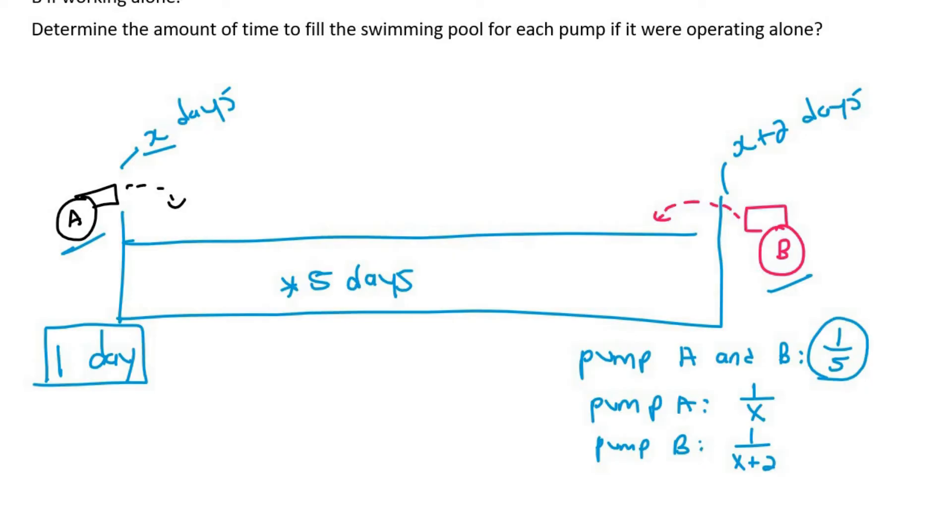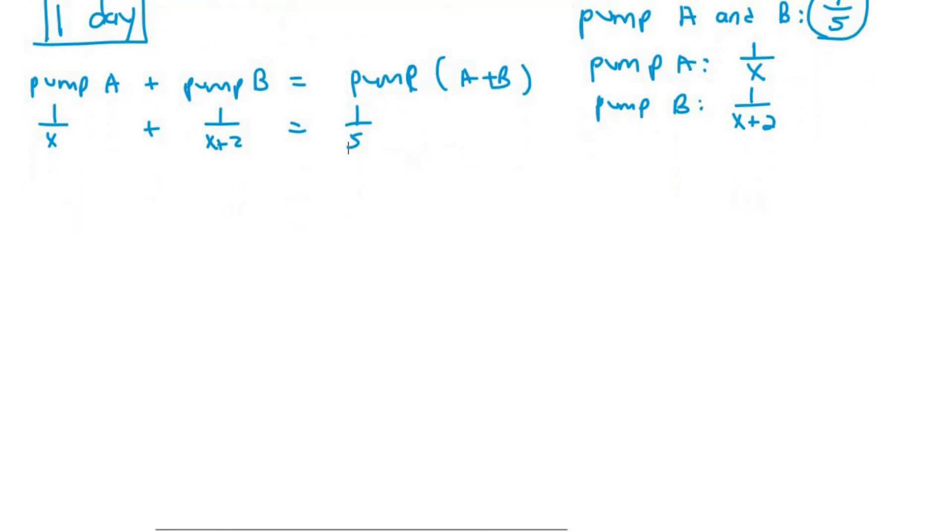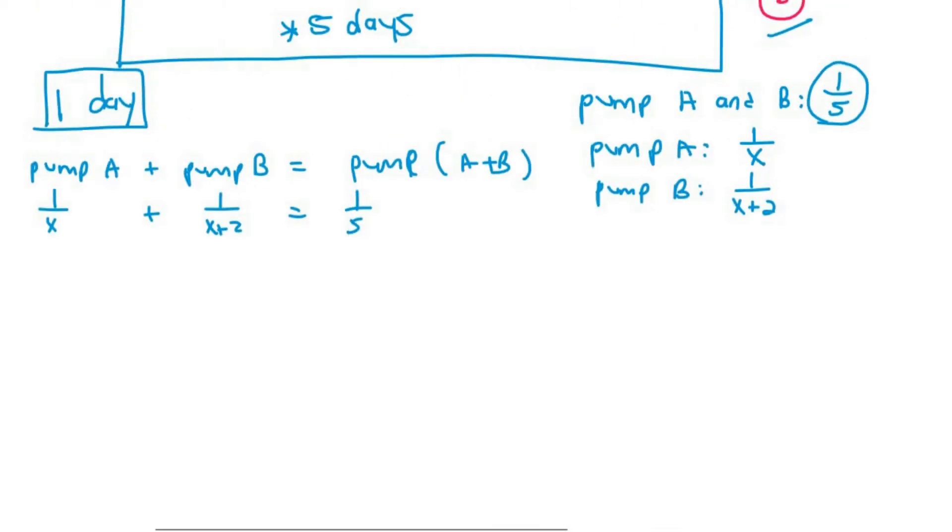So now, surely in one day, if you add what pump A does and you plus it to what pump B can do, then that'll be how much they can both do. So we can say pump A plus what pump B can do would be pump A and B together. So we can say one over X plus one over X plus two should give us one-fifth. You might need to go and watch that part a few more times. Not many of you are going to get that the first time because it's quite complex.